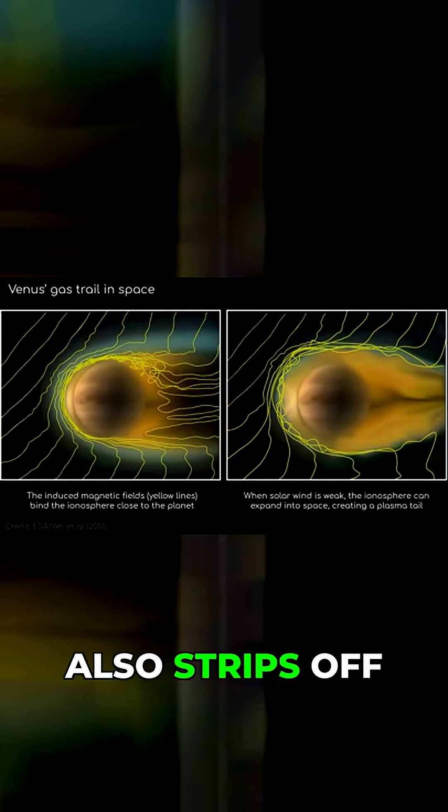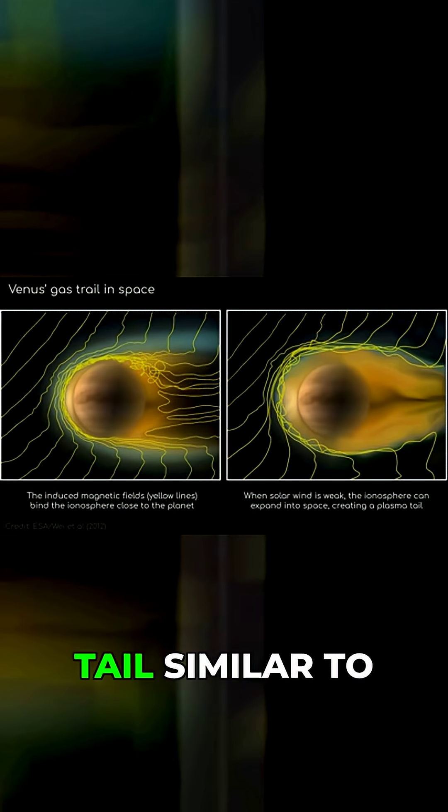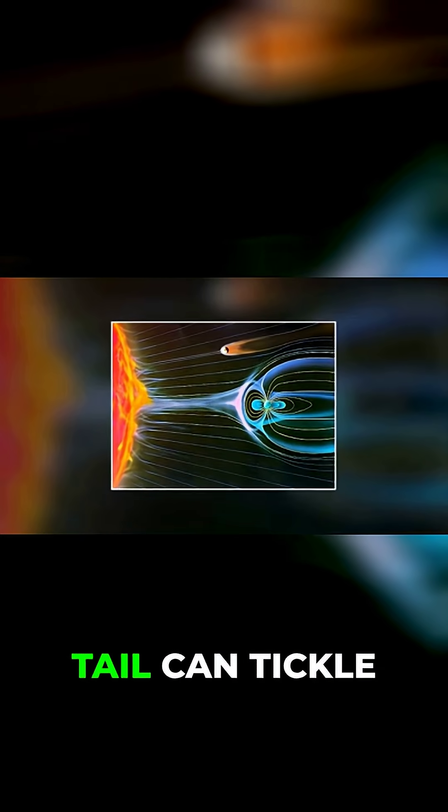Solar wind also strips off the low-density molecules out of the atmosphere, meaning Venus has a tail similar to a comet. Under certain conditions, this tail can tickle Earth when they are in conjunction with each other.